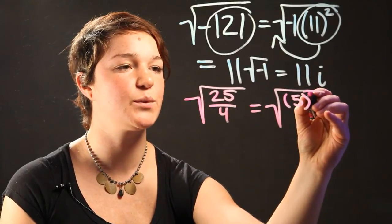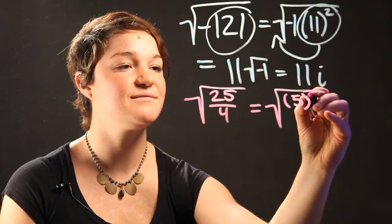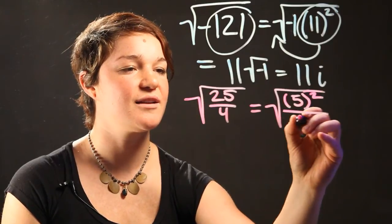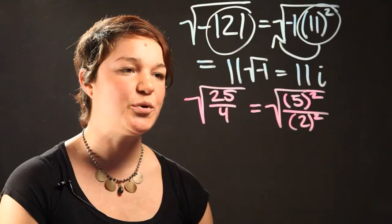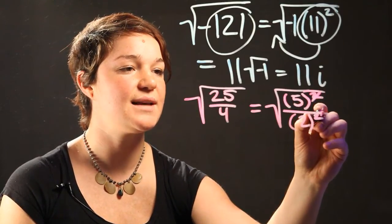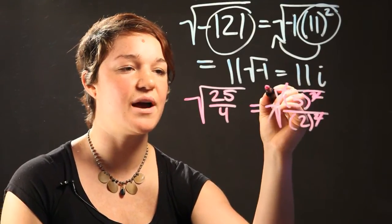So in this case, we know that 25 is 5 squared, and 4 is 2 squared. By putting it in this form, we recognize that we can cross out all the squares and the radical sign.